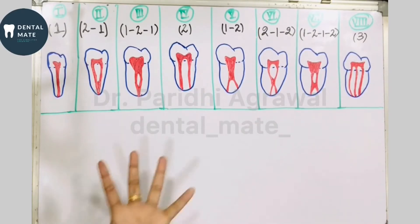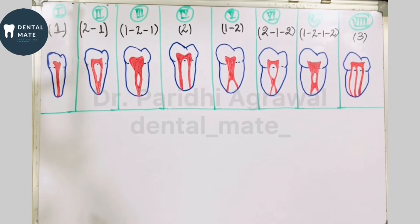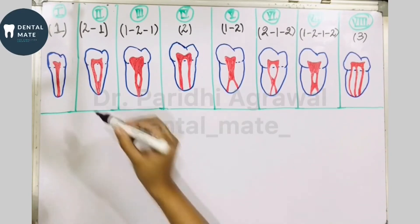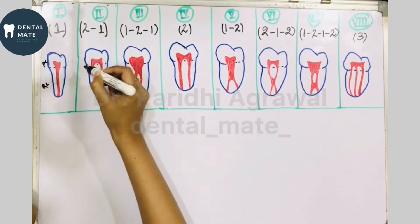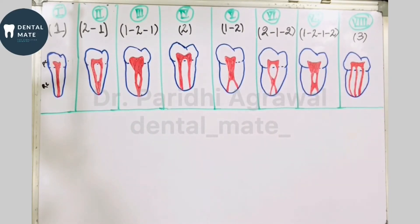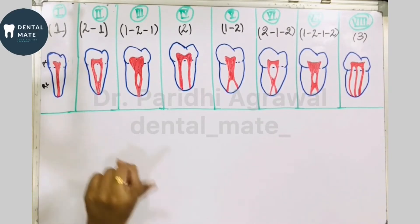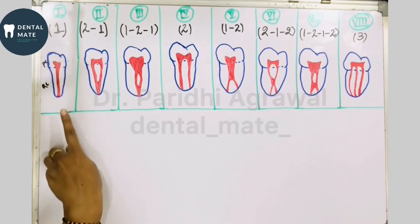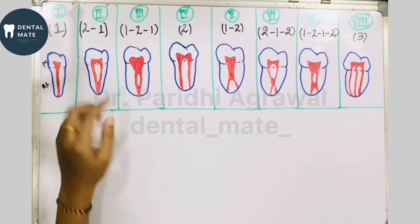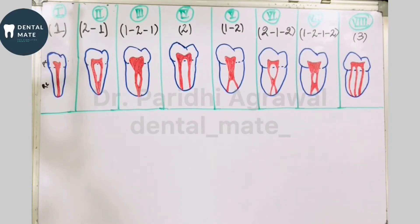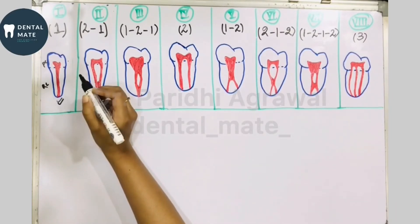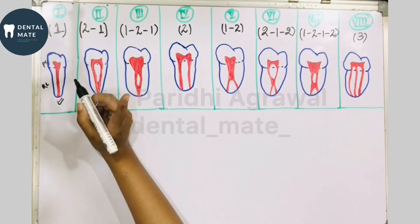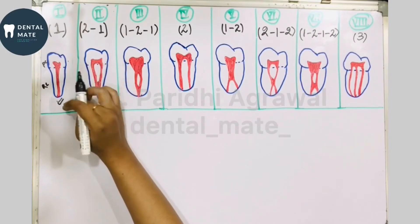Now let us understand the meaning of these numbers, starting with Type 1. This is the pulp chamber, and this is the root canal — I have demarcated a blue line to separate the pulp chamber. In Type 1, a single canal extends from the pulp chamber all the way to the apex. The last number always denotes the number of canals or apical foramina at the apex.